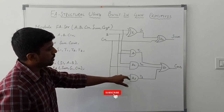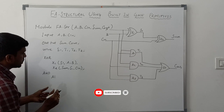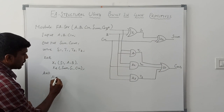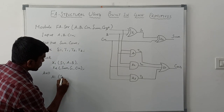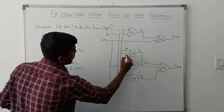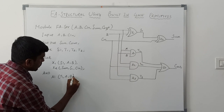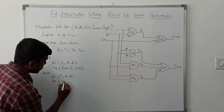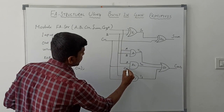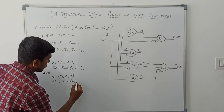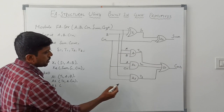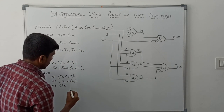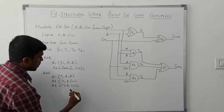For the AND operations we have three gates. First: and a1 — output is t1, inputs are a and b. Second: and a2 — output is t2, inputs are a and c-in. Third: and a3 — output is t3, inputs are b and c-in. Close the AND instantiations with a semicolon each.